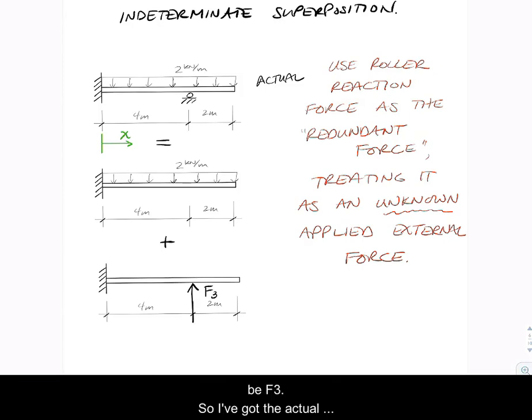This is going to be F3. So I've got the actual structure equal to structure one, which is a determinant structure with all the applied external loads on it, so the distributed load is present. And structure two is again the cantilevered beam, however it has applied to it the external load that is supplied by the roller.